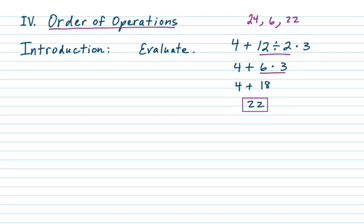Some people use PEMDAS to help them remember the order of operations. P is for parentheses, E is for exponents, M is for multiplication, D is for division, then addition and subtraction. The thing I don't like about PEMDAS is it looks like multiplication comes before division, and that's not true — they're actually equal. The same thing is true with addition and subtraction: they're equal priority.